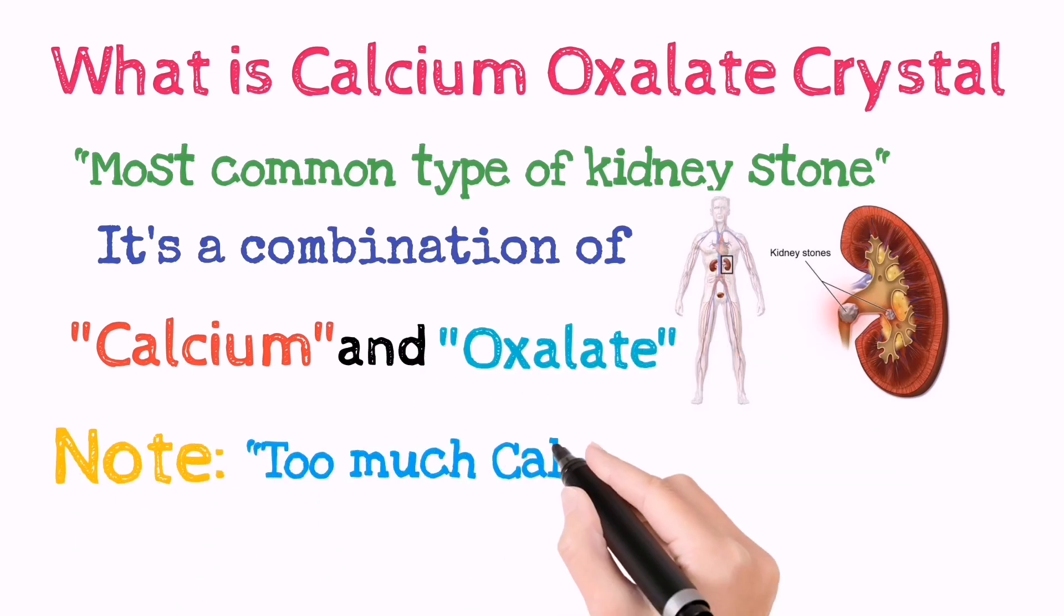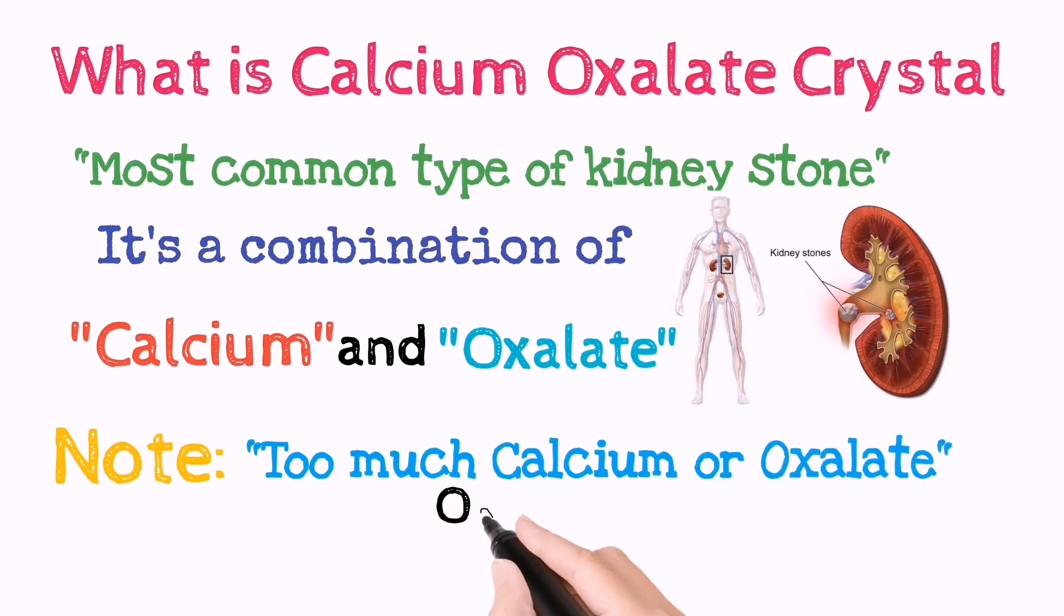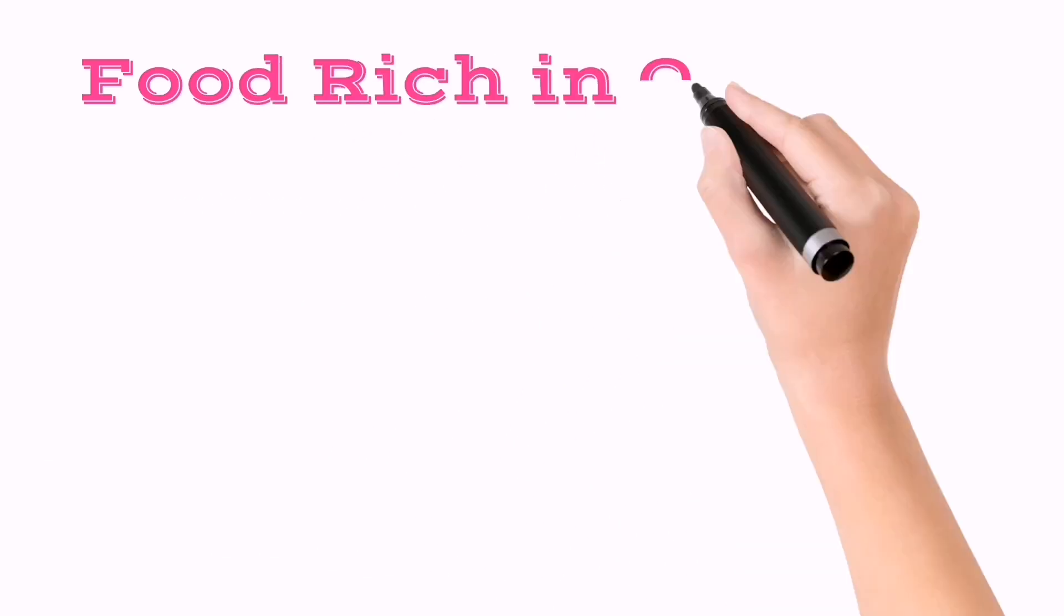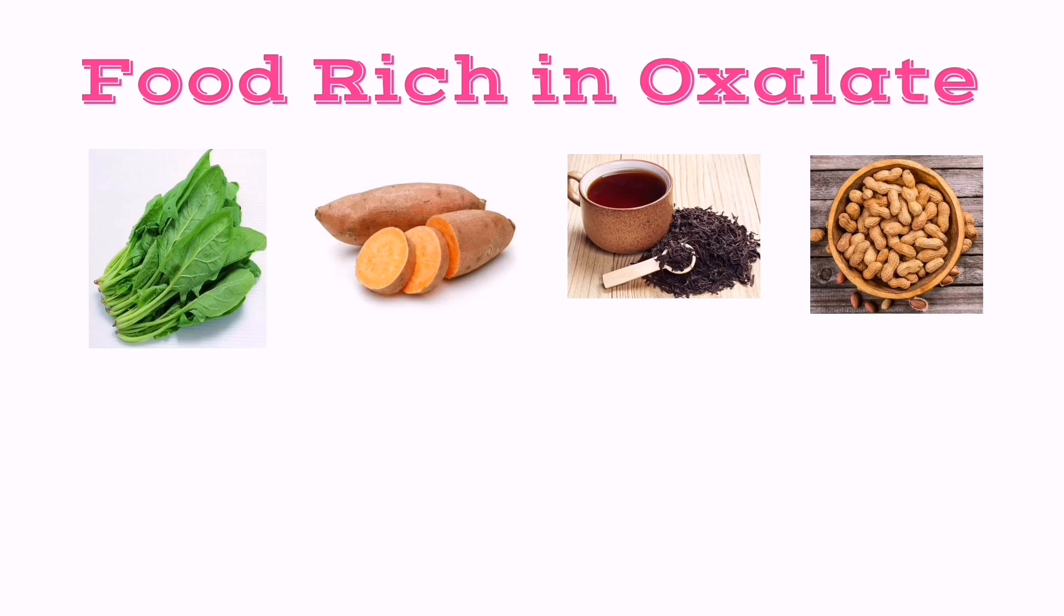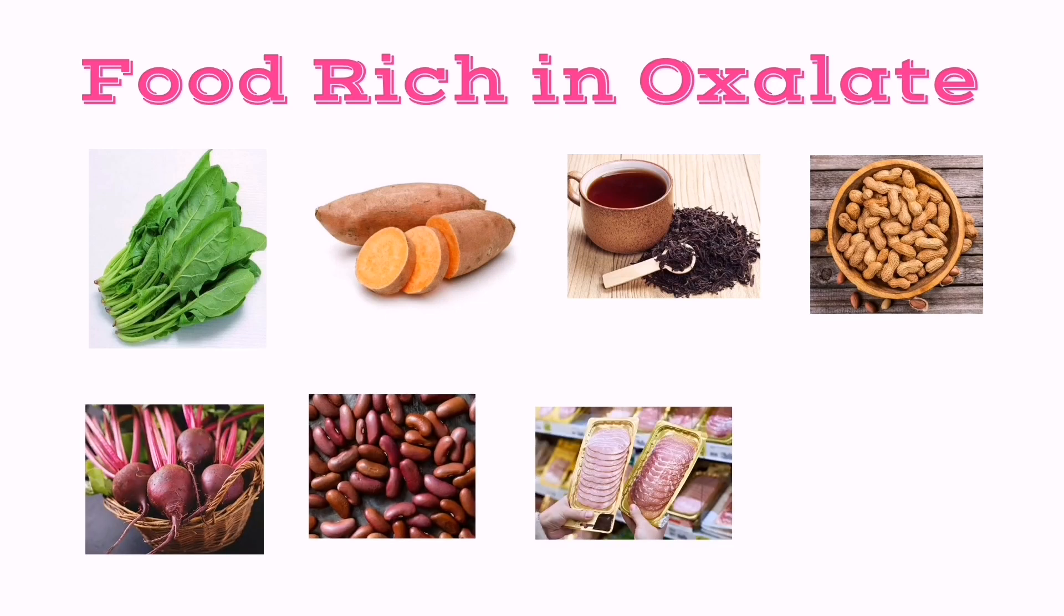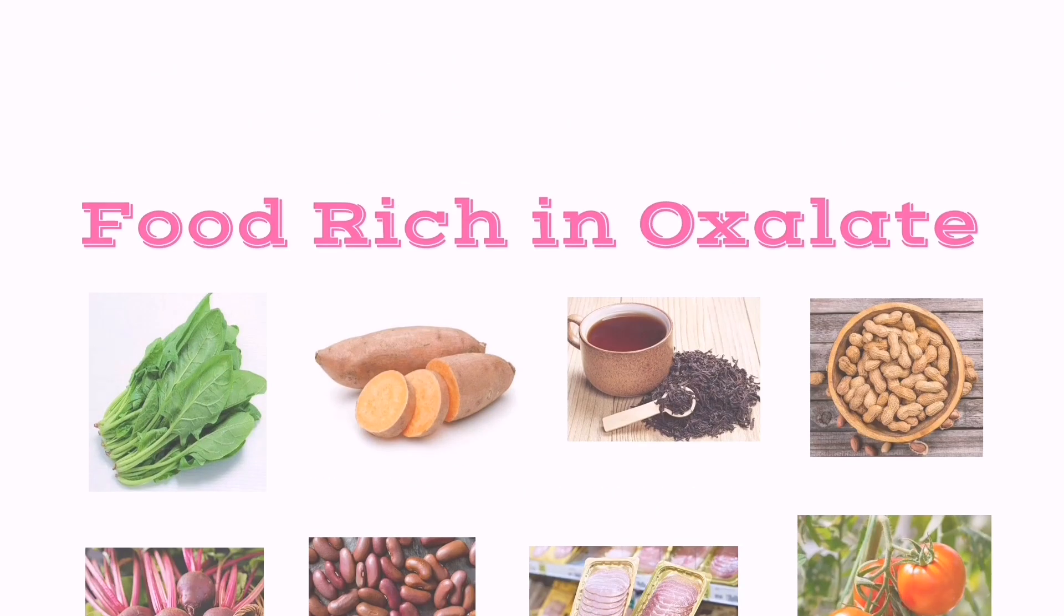Foods rich in oxalate include spinach, sweet potatoes, black tea, peanuts, beets, beans, processed meat, and tomatoes.